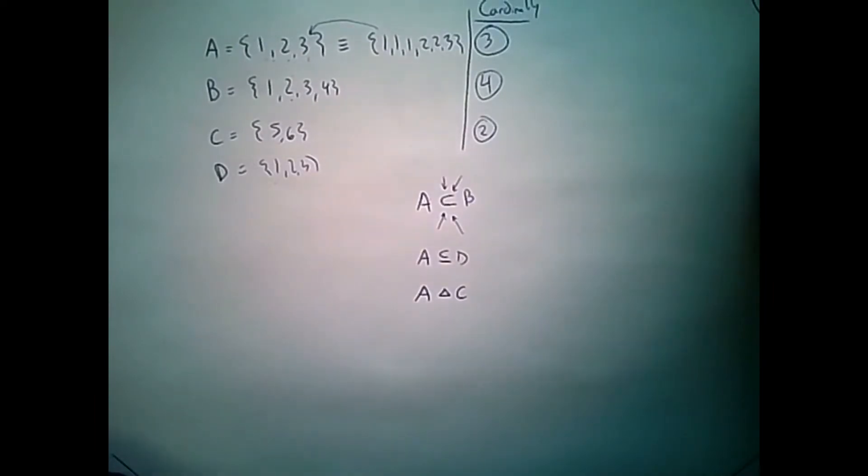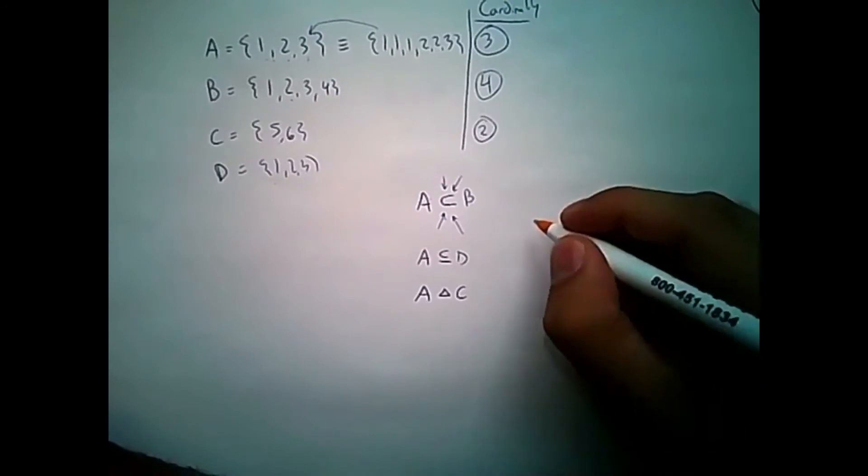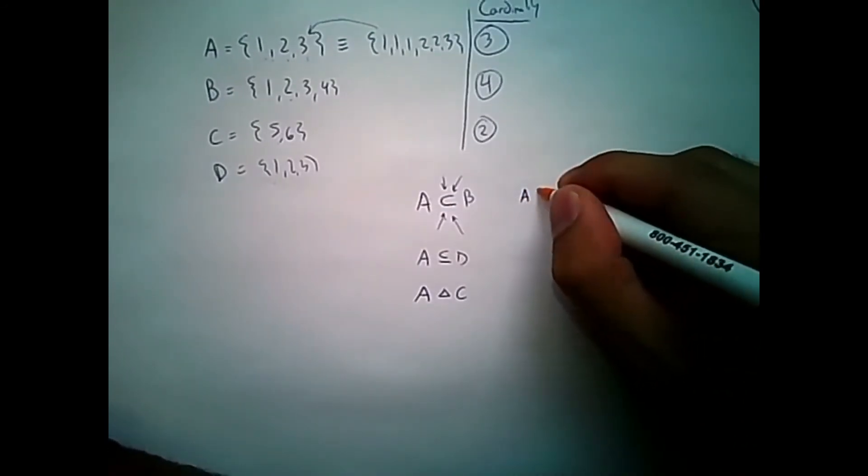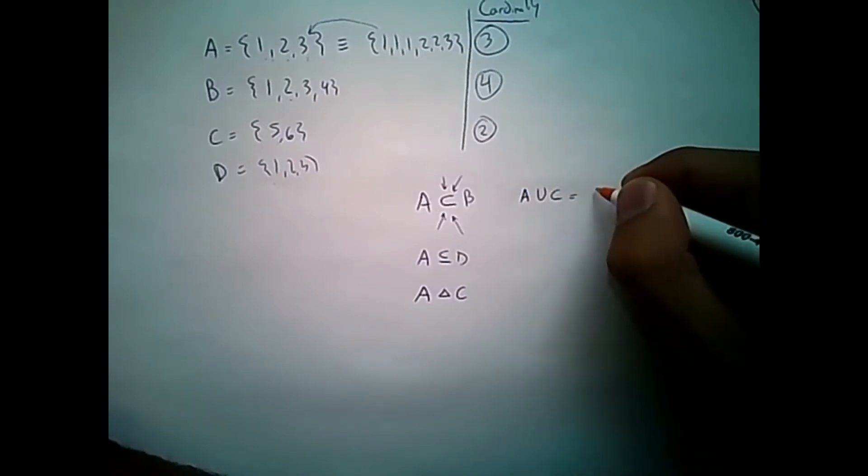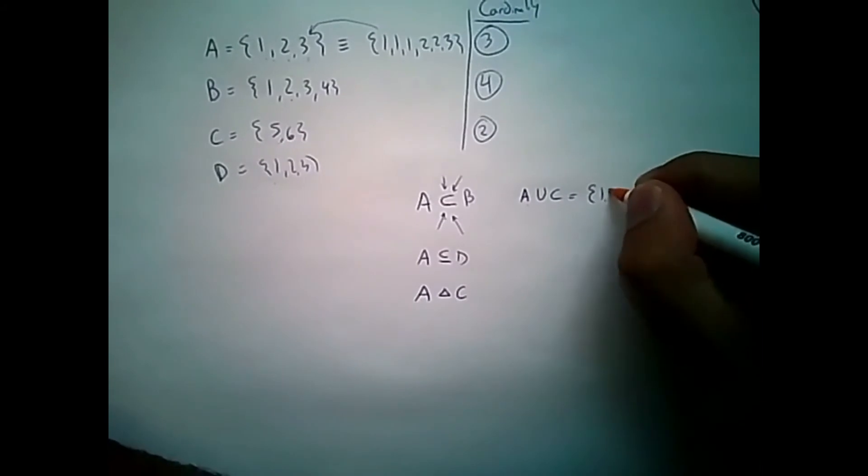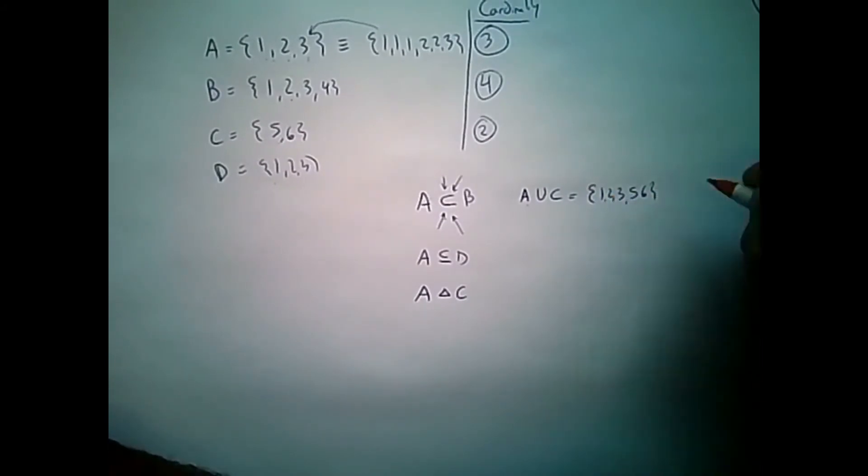Now, if we want, we can also talk about building greater sets with the union and intersection operations. So A union C, for example, is all the elements in A union with C. So 1, 2, 3, and 5, 6.